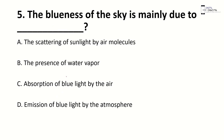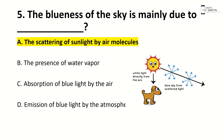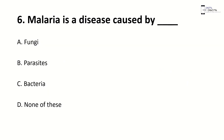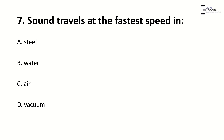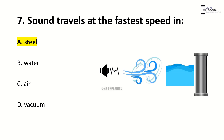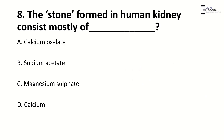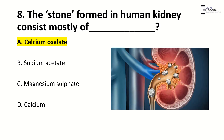The blueness of sky is mainly due to — right answer is the scattering of sunlight by air molecules. Malaria is a disease caused by — right answer is B, parasites. Sound travels fastest in — right answer is A, steel. The stone formed in human kidney consists mostly of — right answer is A, calcium oxalate.